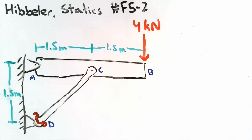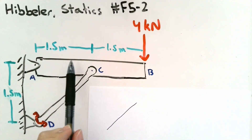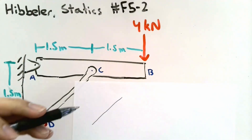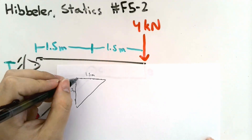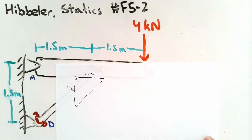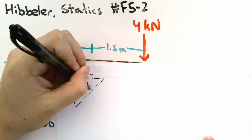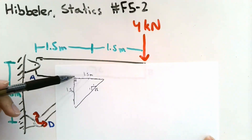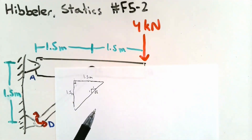Before I start drawing my diagram, I want to note some relationships on bar CD. Bar CD is a diagonal bar that has a horizontal distance of 1.5 meters and also a vertical distance of 1.5 meters. This should give you some clues as to what type of triangle this is. When you have a right triangle where two of the sides have equal magnitudes, the triangle is a 45-degree right triangle. The 45-degree right triangle has side ratios of 1 to 1 to √2, meaning whatever magnitude we get for the force in the x or y components, the total diagonal force should equal the x-component times √2.